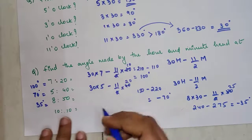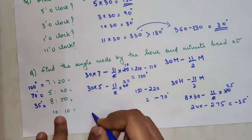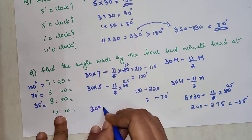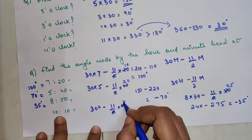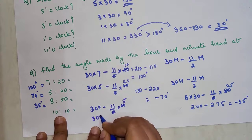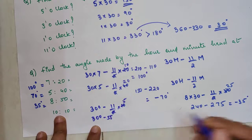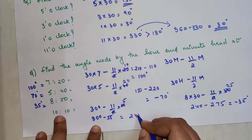So now for this one we have 10 into 30, which is going to be 300 minus 11 upon 2 into 10. So this is 5. So 300 minus 55. 255. So that gets you 245, correct?